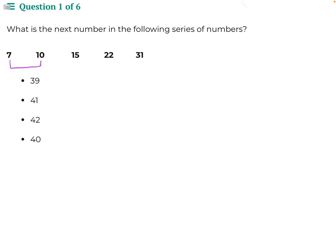The difference between our first pair, 7 and 10, is 3. The difference between 15 and 10 is 5. The difference between 15 and 22 is 7. And the difference between 22 and 31 is 9.